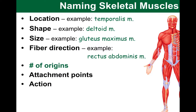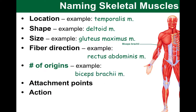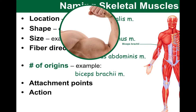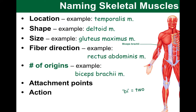Next, let's consider the number of origins indicated in a muscle name — how many heads a muscle has. The obvious example is the biceps brachii, the more anterior muscle of the upper arm responsible for flexion. The term biceps tells us there are two heads. We can also look at the triceps brachii, responsible for extension, which has three heads as the name suggests.